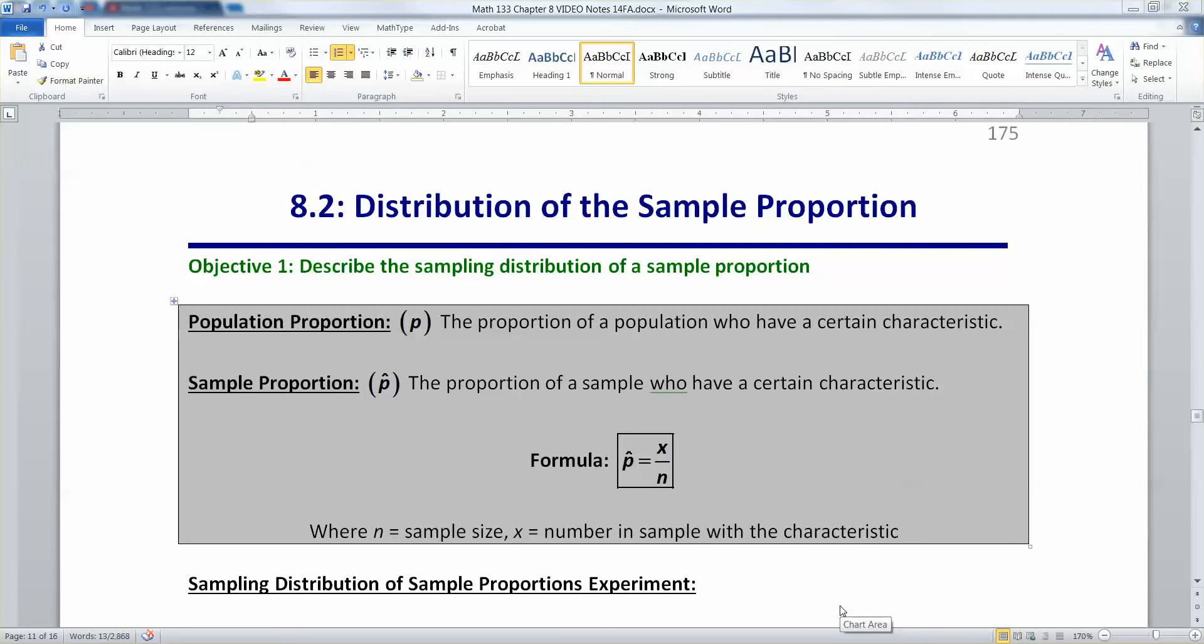Before we can move on to the inferential statistics of chapters 9, 10, 11, and so on, we need to establish the sampling distribution for one other important statistic and parameter combo, and that is for proportions.